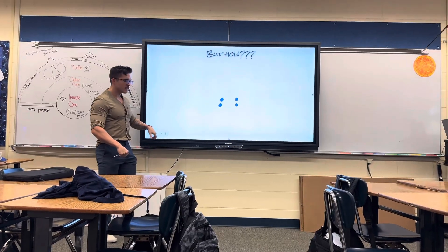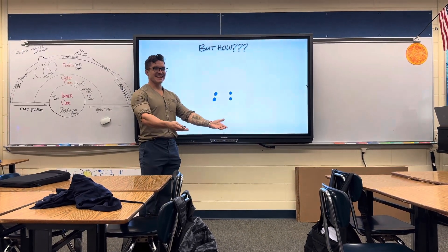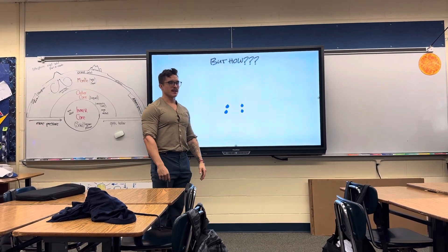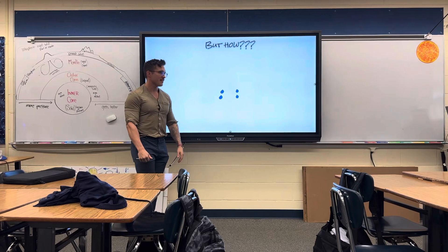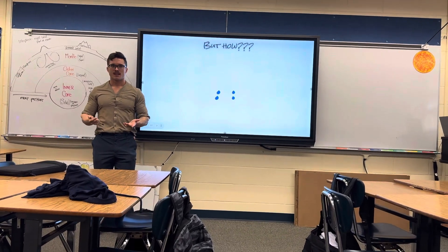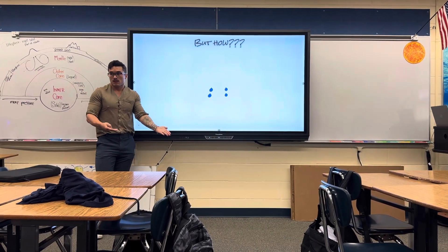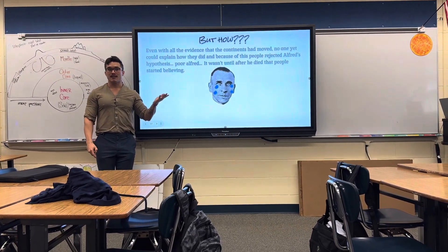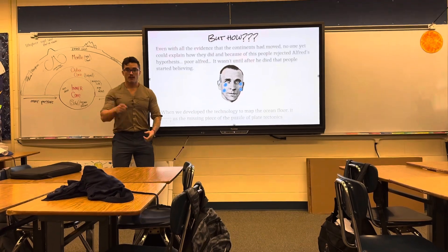Alfred Wegener spent his entire life gathering all this information, brought it back, and said 'I found that they did move.' But his friends said 'how did it move? If you can't tell me how it moved, what is it - magic?' Unless you can explain how it actually happened, he couldn't prove it was right. Unfortunately, Alfred died without ever figuring it out.